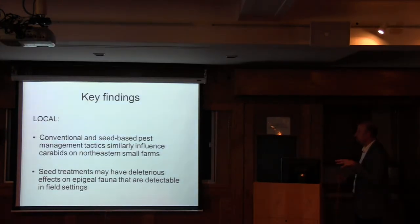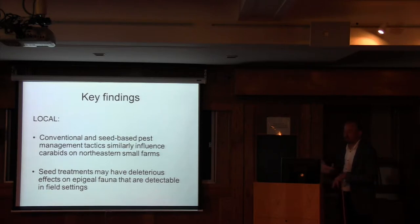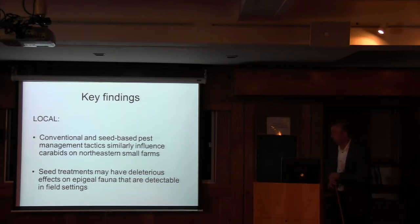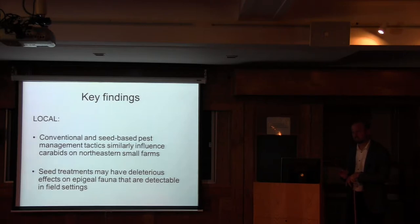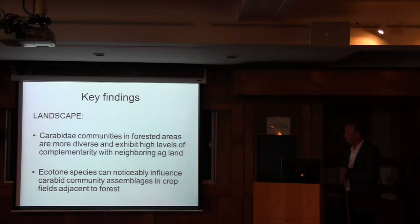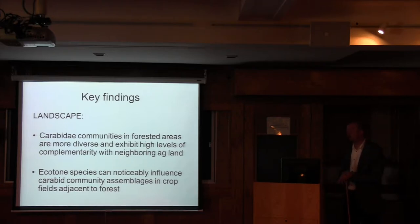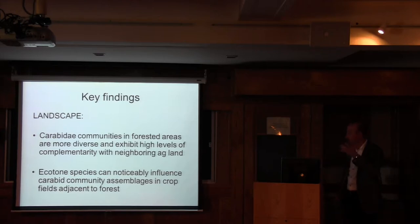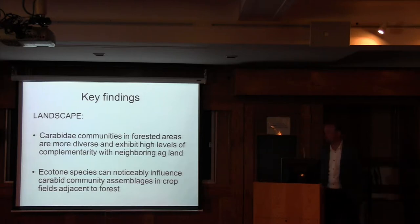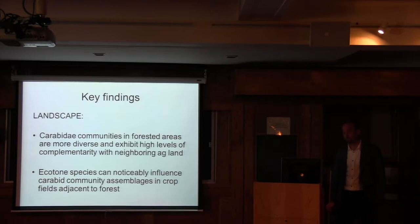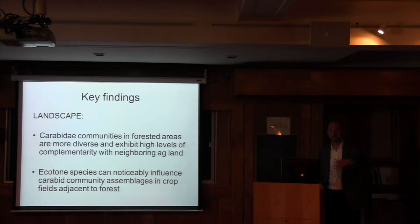Key findings from the first study: at the local level, both conventional and seed-based pest management tactics similarly influenced carabids on northeastern small farms, attributed to the neonicotinoid seed treatment's deleterious effects detectable both in lab and field settings — neonics being more in the news now for potential effects on bees as well. At the landscape level, carabid communities in forested areas are more diverse and exhibit high complementarity with neighboring ag land, providing evidence to retain forest fragments in agricultural landscapes. Some species readily move across that ecotone and influence communities in adjacent maize.